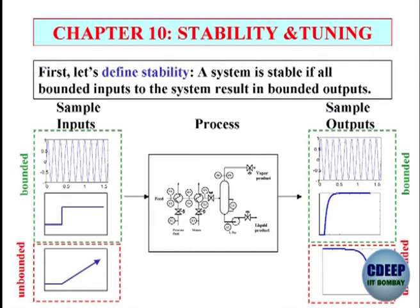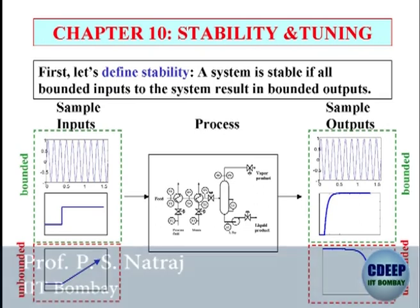If you give one bounded input — like a step, which is a bounded input — and you see the output is bounded, do not jump to the conclusion that it is BIBO stable. It cannot be verified from that point of view. What are example inputs which are bounded? A sinusoidal signal is bounded, and a step is also bounded. An example of an unbounded input is a ramp kind of signal — it goes without bound. For all bounded inputs, if the output is bounded, it is very difficult to check practically, since you cannot give all bounded inputs.